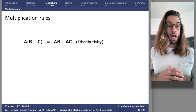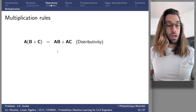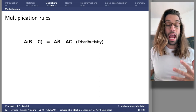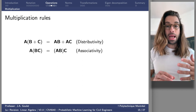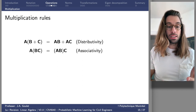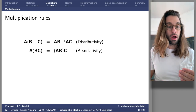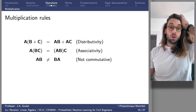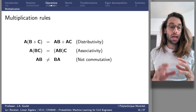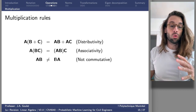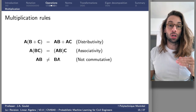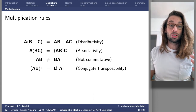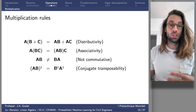There are operation rules for multiplication. There's distributivity: A times (B + C) equals A times B plus A times C. There's associativity: I can move the parenthesis so A times (B times C) equals (A times B) times C. With matrix multiplication, the order matters — doing A times B is not necessarily equal to B times A. This is not a commutative operation. And (A times B) transpose equals B transpose times A transpose — this is the conjugate transposability property.